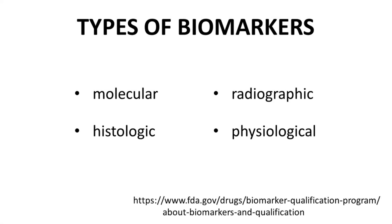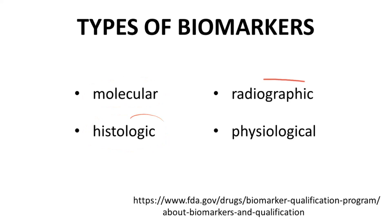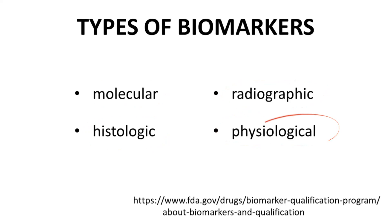The FDA lists four types of biomarkers: molecular, histologic, radiographic, and physiological. Let's talk about representative examples of each of these. While the FDA language leans towards monitoring biomarkers in patients, biomarker discussions are relevant to preclinical studies in animal species as well.